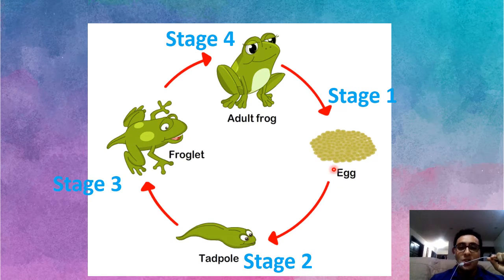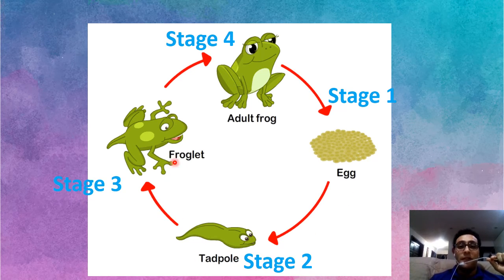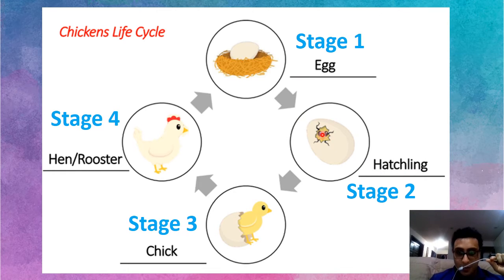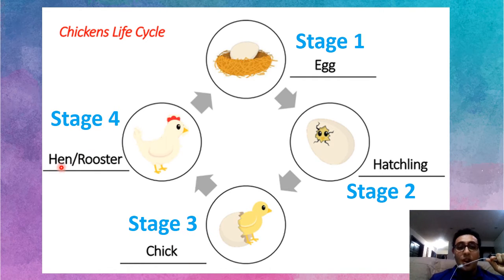Look at a chicken's life cycle: stage one, egg; stage two, hatchling — super small, super baby; stage three, chick; stage four, hen or rooster. And for a dog: stage one, mother and baby; stage two, puppy; stage three, adolescence — they're young, just like a human; stage four, adult.